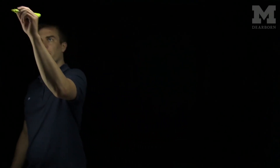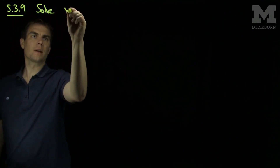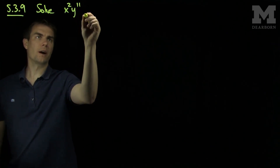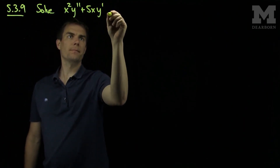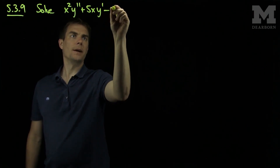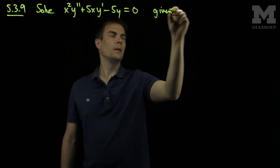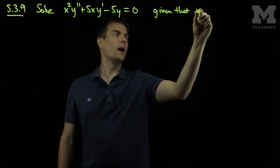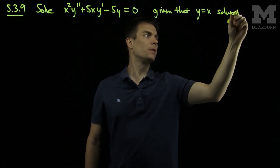Hello students. In this video we'll see how to solve problem 5.3.9. Problem 5.3.9 asks us to solve x squared y double prime plus 5x y prime minus 5y equals zero, given that y equals x solves the equation.